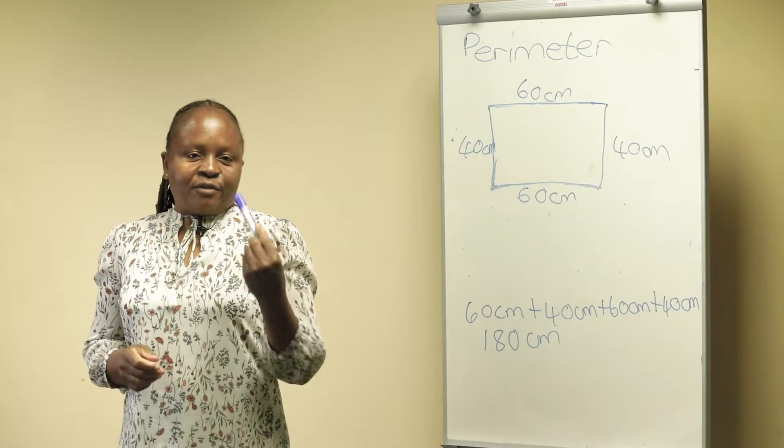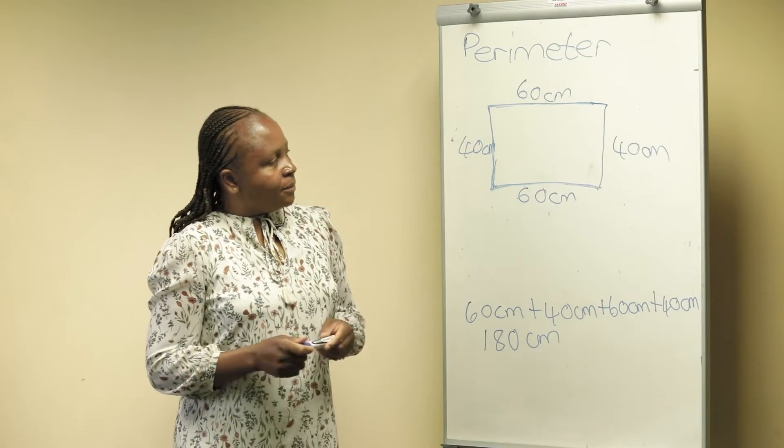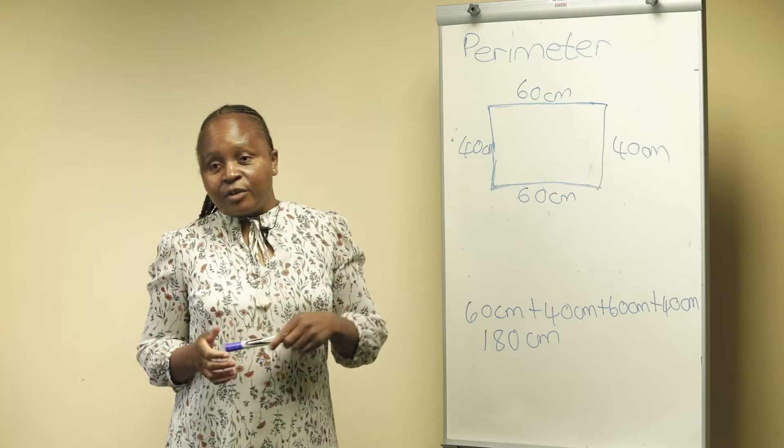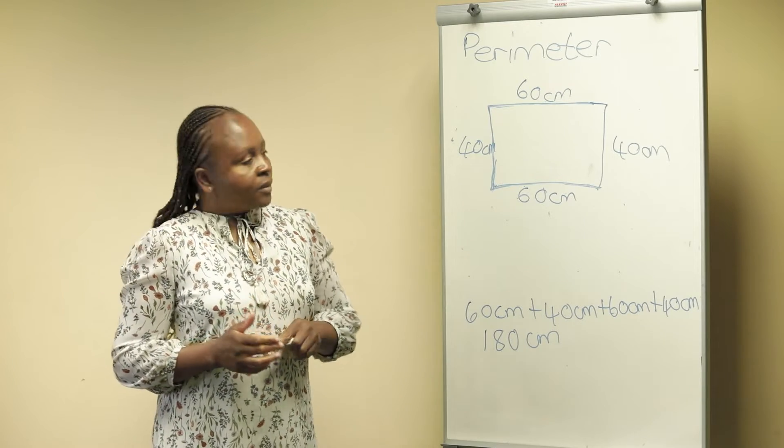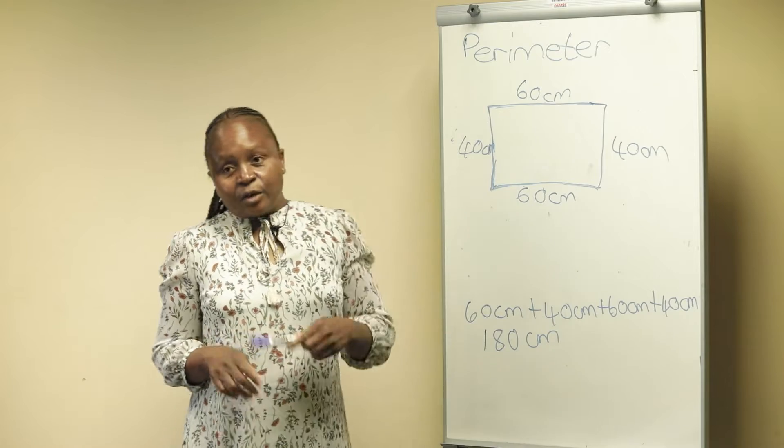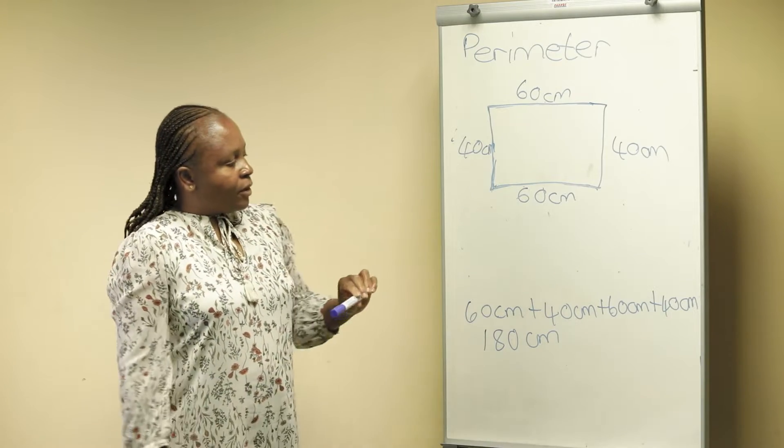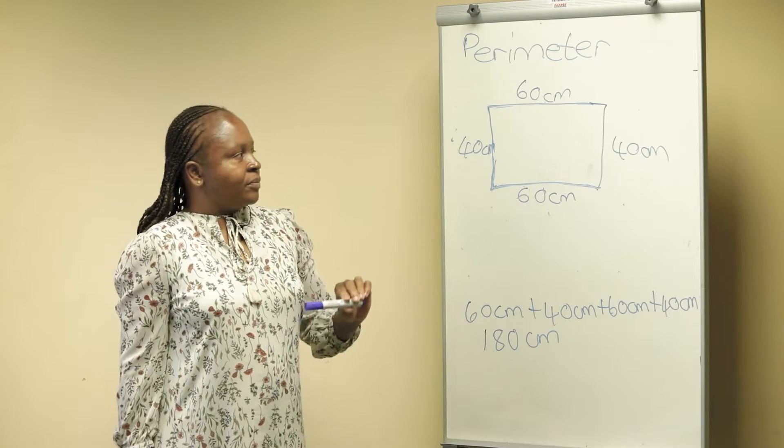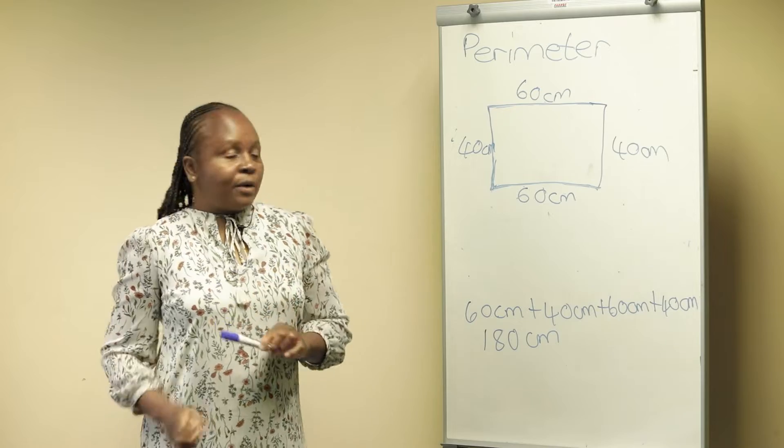As we have learned in previous grades, perimeter is adding right round the shape. You can either count the blocks or you can add right round the shape. The example I have for today is adding right round our shape.